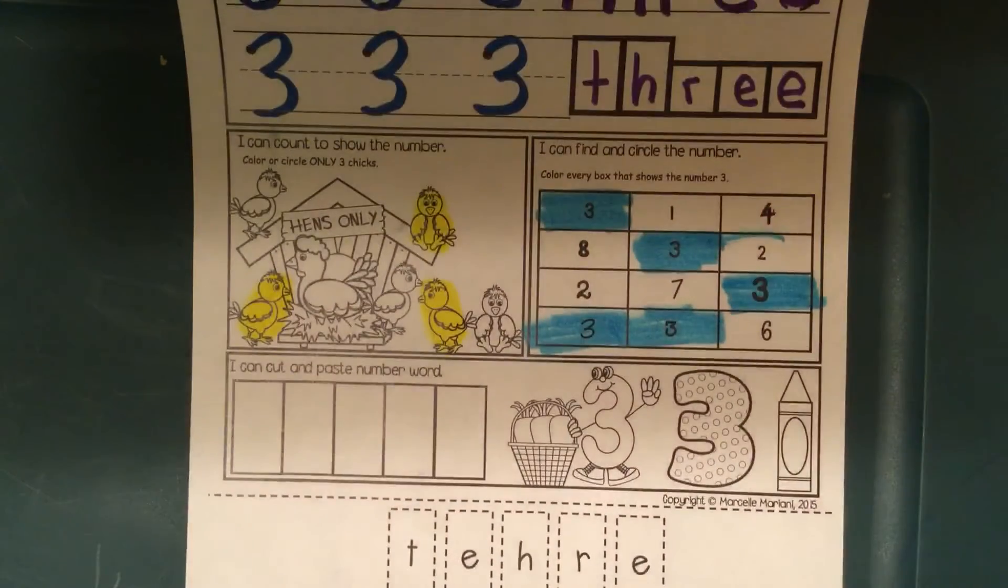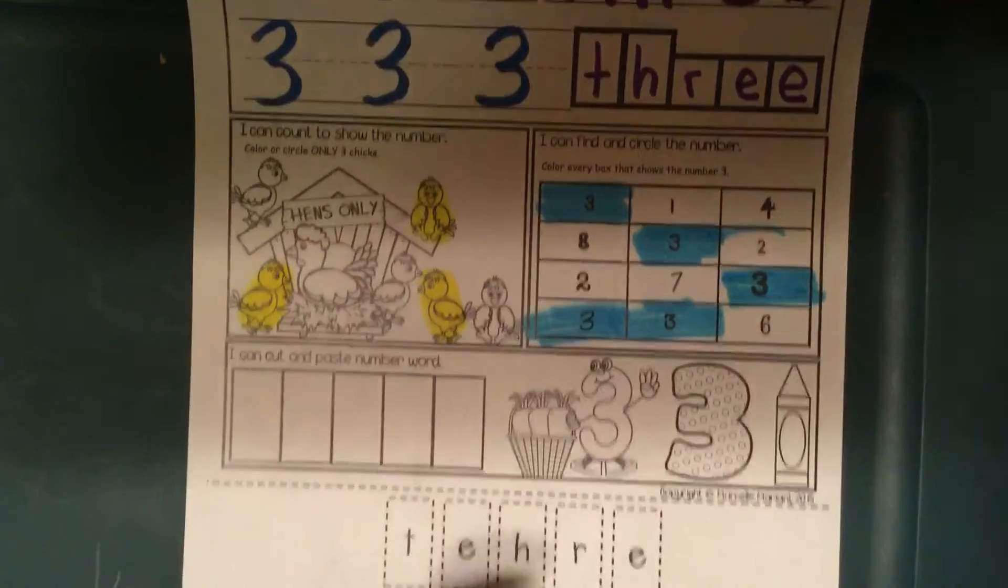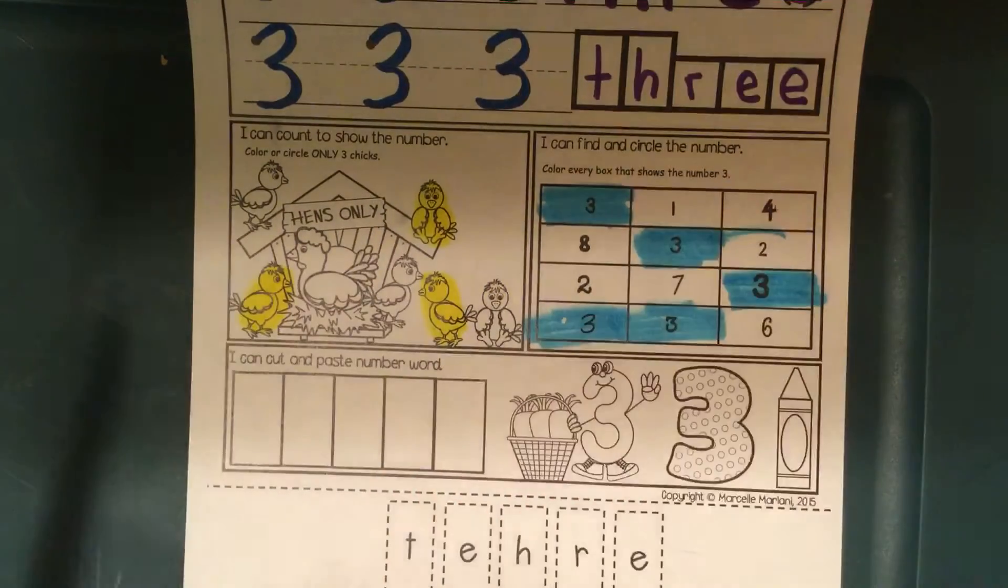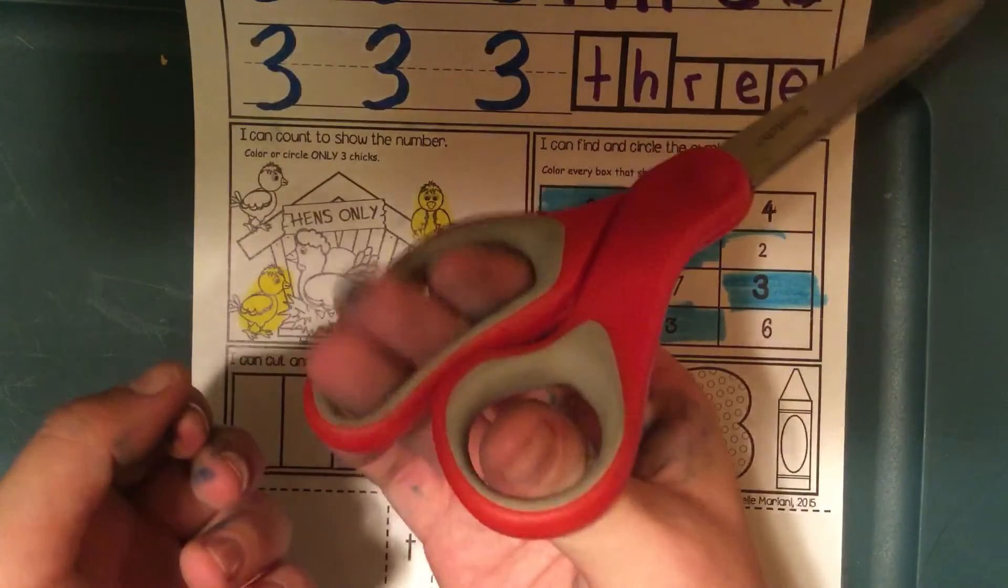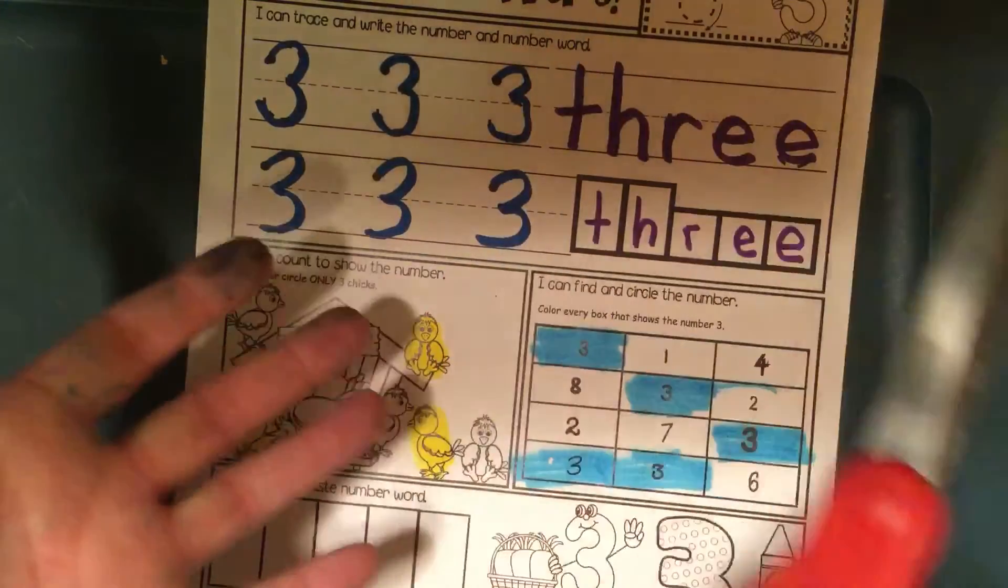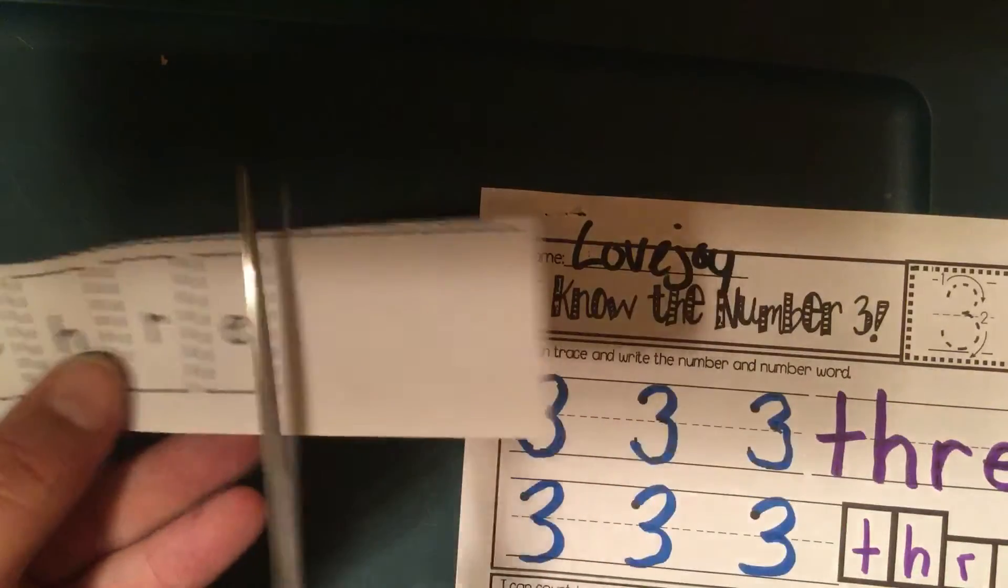Then the last thing we're going to do is cut out and glue the number word. So you need scissors for this one and glue. My scissors, I'm going to put my thumb in the circle and my other fingers right here so I can open and close my scissors with one hand. Because I need this hand to hold the paper. And I'm going to cut on that dotted line. Just like that.